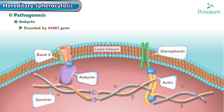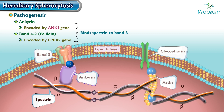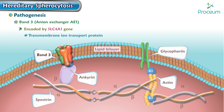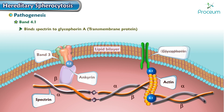Ankyrin is encoded by the ANK1 gene. Band 4.2, previously termed pallidin, is encoded by the EPB42 gene. Ankyrin and band 4.2 bind spectrin to band 3. Band 3 is the anion exchanger AE1, encoded by the SLC4A1 gene, and helps with transmembrane ion transport. Band 4.1 binds spectrin to glycophorin A, which is a transmembrane protein.